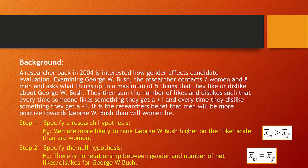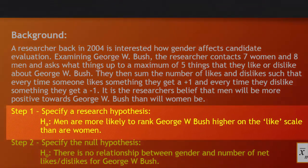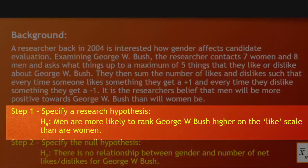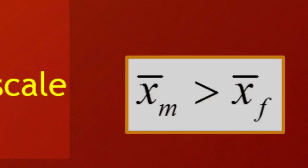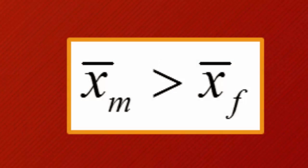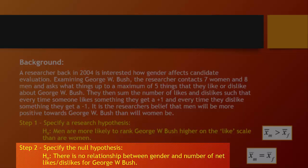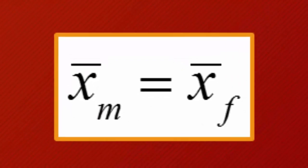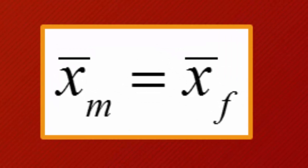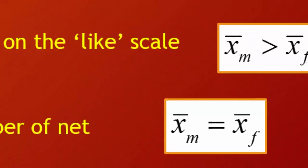The research hypothesis might read: men are more likely to rank George W. Bush higher on the like scale than are women, which is equivalent to saying the mean for men is expected to be greater than the mean for women. We also specify a null hypothesis, saying there's no relationship between gender and the number of likes and dislikes for George W. Bush — essentially that the mean for men will not be statistically significantly different from the mean for women.